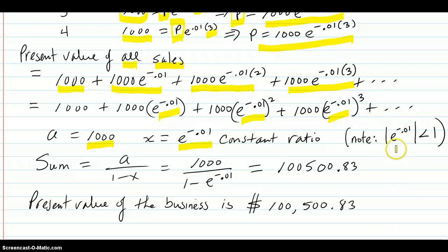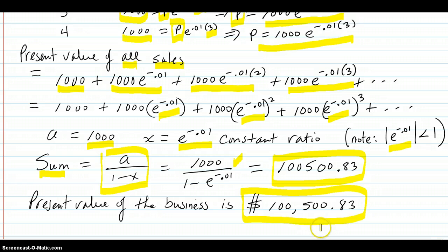We just check over here to see if that is less than 1, which it is. So we put in our sum formula, a divided by 1 minus x. And we do the math on it, and we get this, which means that the present value of the Christmas tree business is $100,500.83.